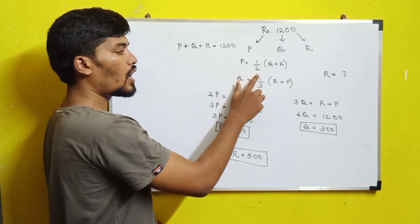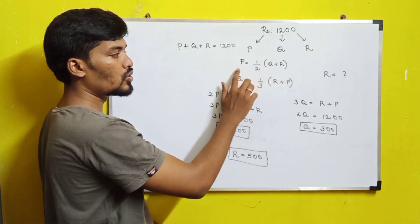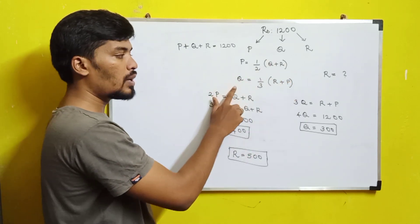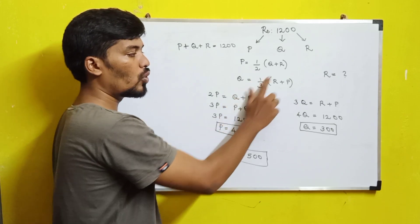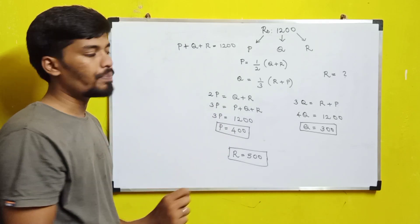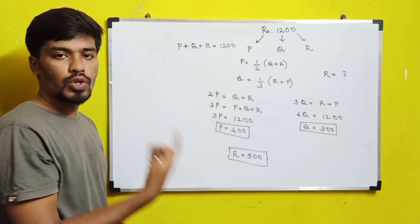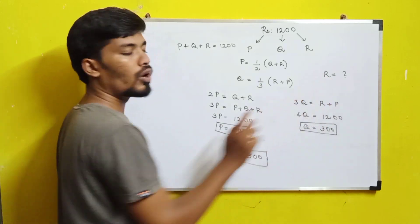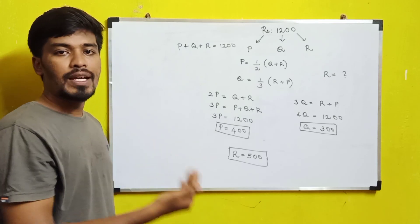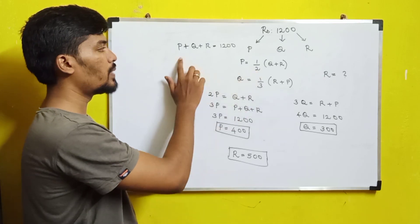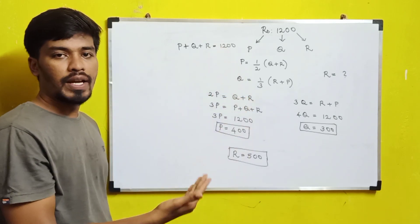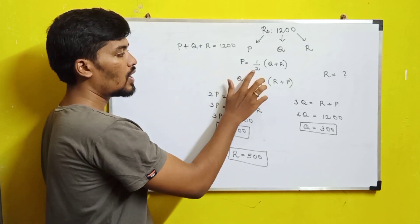From the given question, P's amount is half of the amount received by Q and R, and Q's amount is one third of the total amount received by R and P. These are the two equations we form. We also know that P + Q + R = 1200, since 1200 is being divided among these three members.